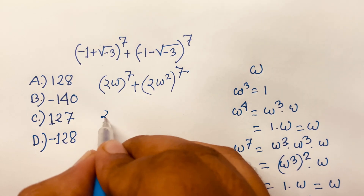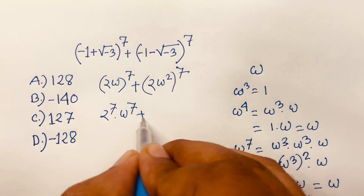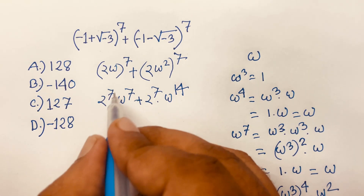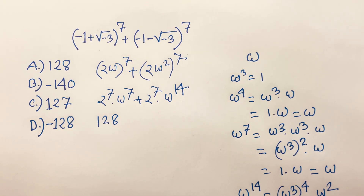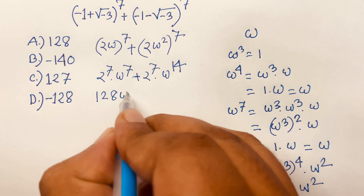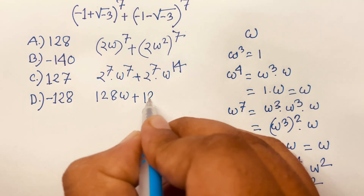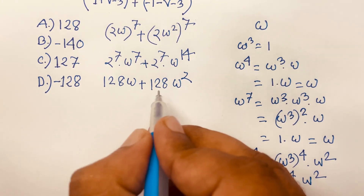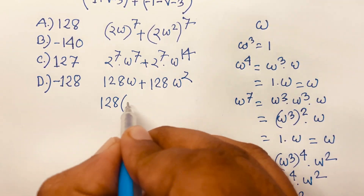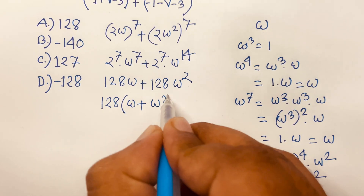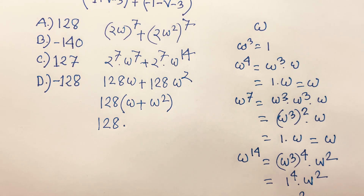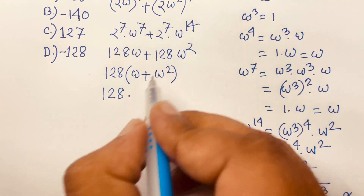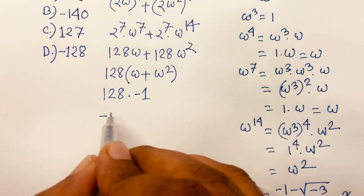This gives us 2^7 times ω^7 plus 2^7 times ω^14. Since ω^7 = ω and ω^14 = ω², we have 2^7 = 128. So it becomes 128ω + 128ω². Taking 128 as common, we get 128(ω + ω²). Since ω + ω² = -1, the result is 128 times (-1) = -128.